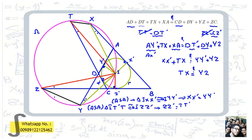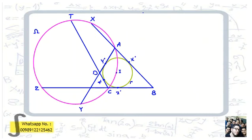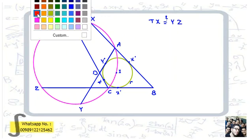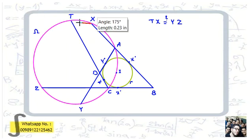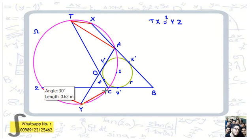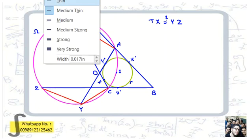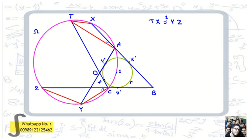To prove XT = YZ, we use the fact that X, T, Y, Z are on the same circle omega. Since they lie on omega, XT = YZ if and only if the corresponding inscribed angles are equal. Specifically, if we let the angle at C be alpha and another angle be beta, then proving alpha = beta will solve the problem.